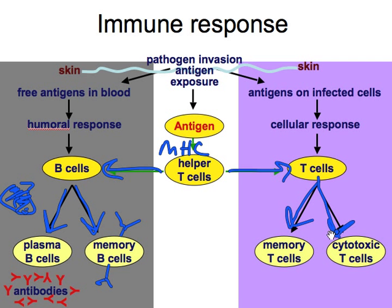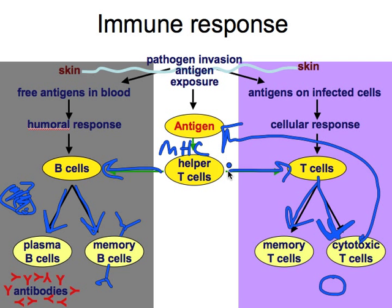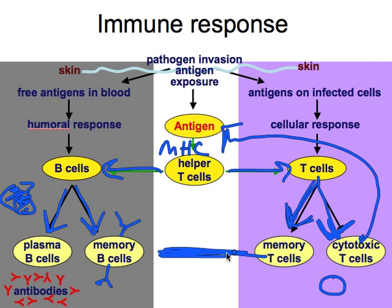At the same time, after the helper T-cells alert the B-cells, they go over to the T-cells and make memory T-cells — very similar to memory B-cells. Most importantly, they talk to the cytotoxic T-cells to go take care of the infected cells. If we come across the same pathogen again, memory B-cells make plasma B-cells and memory T-cells make cytotoxic T-cells. So we have two different things helping us fight the same pathogen — but only if we've seen that specific pathogen before.